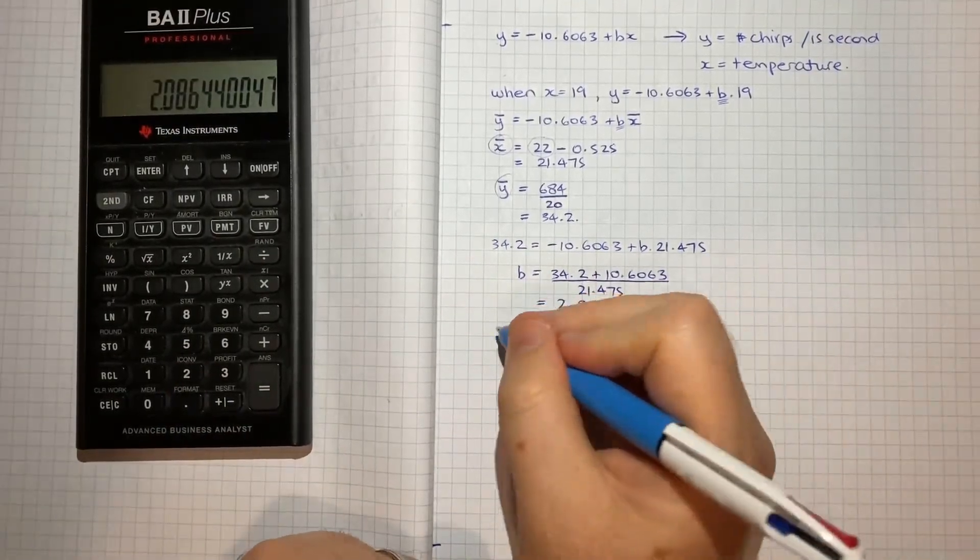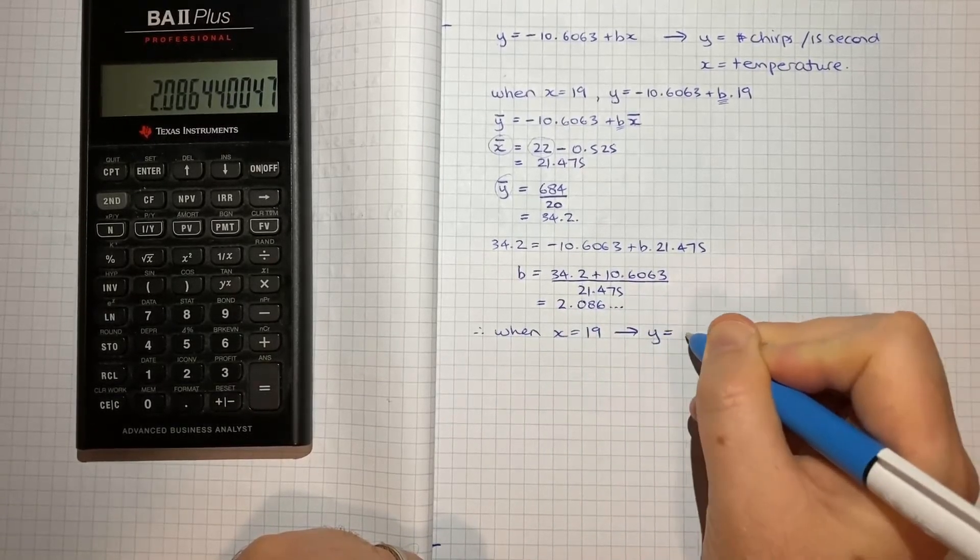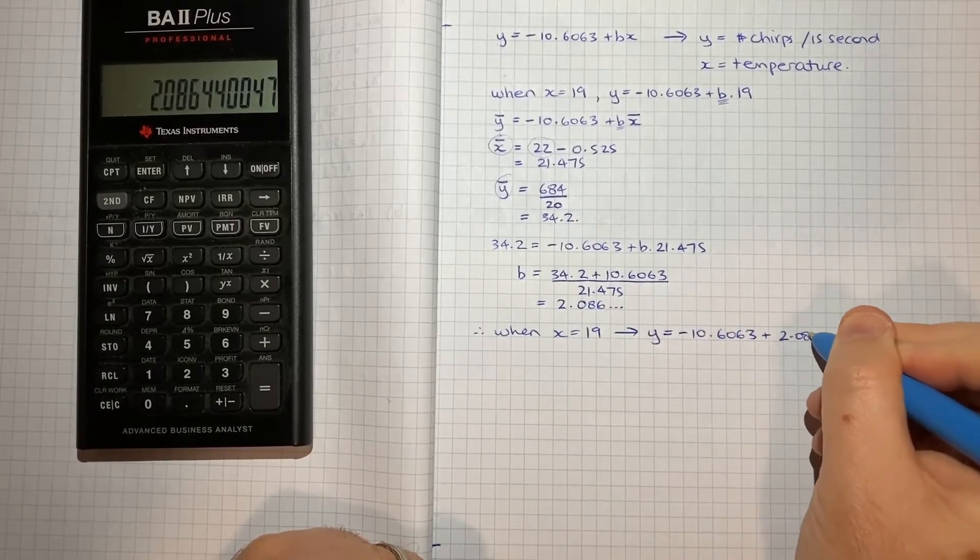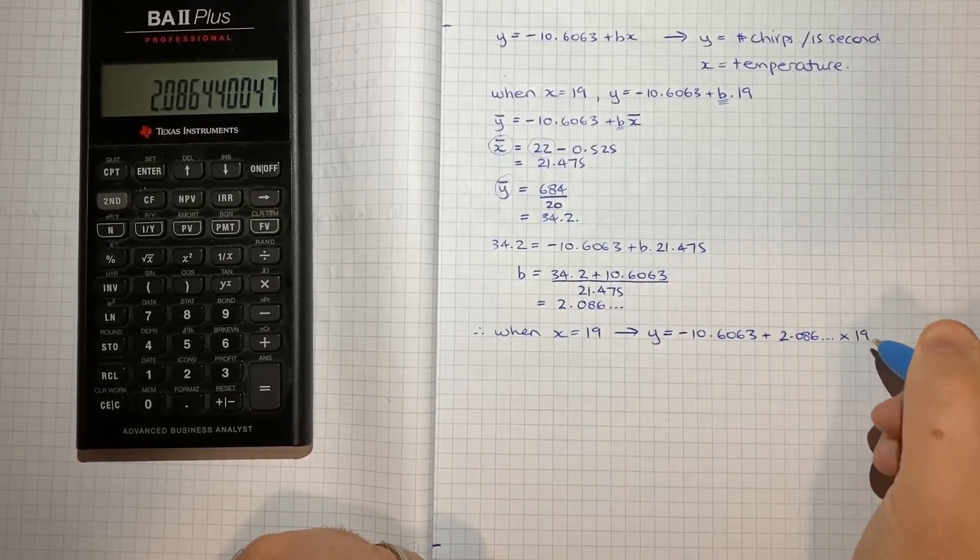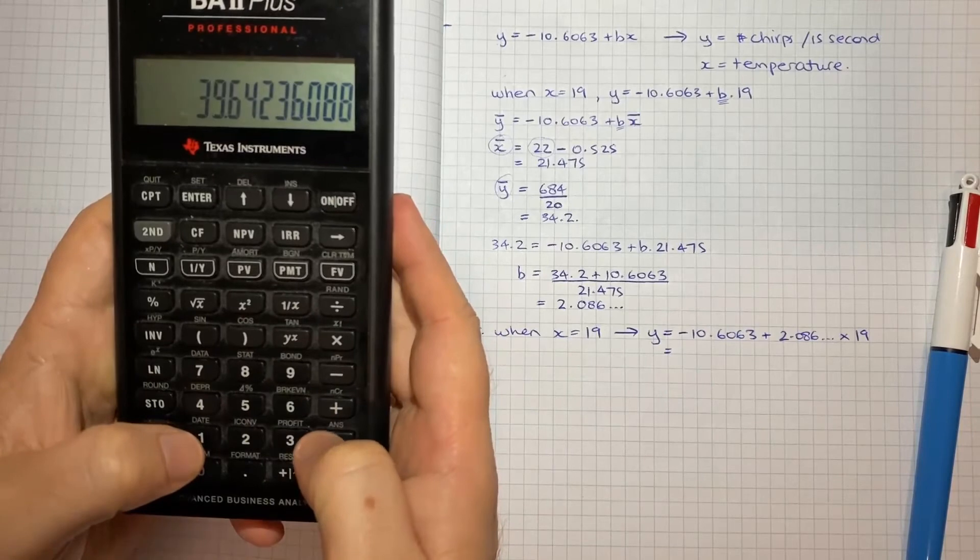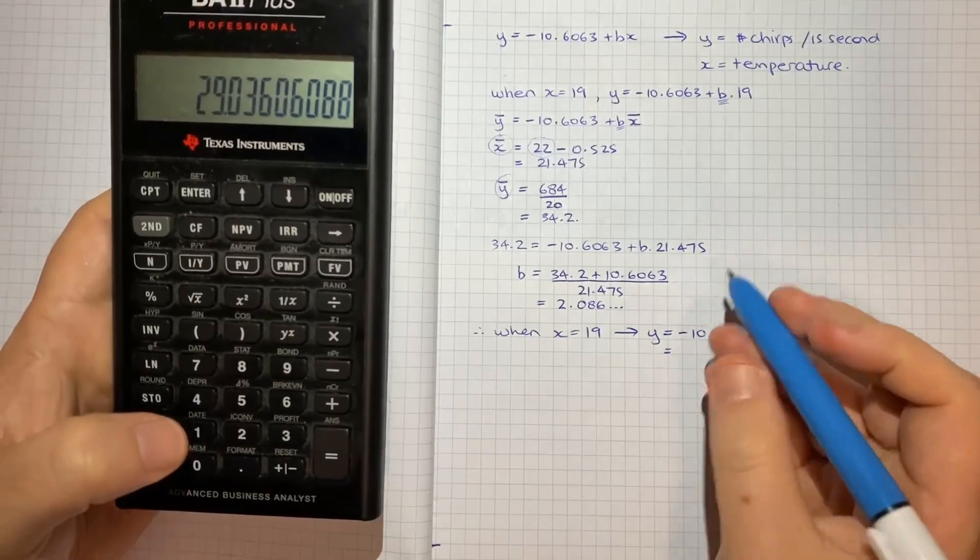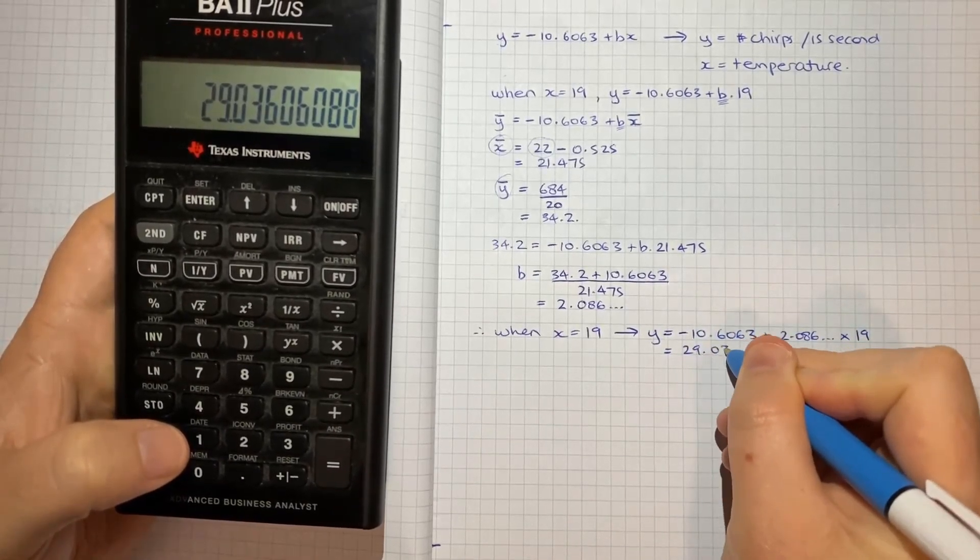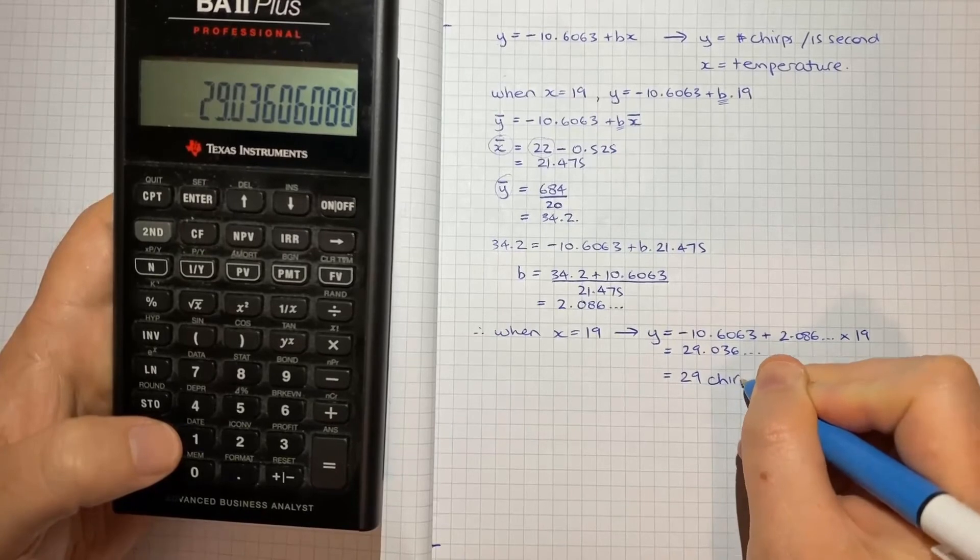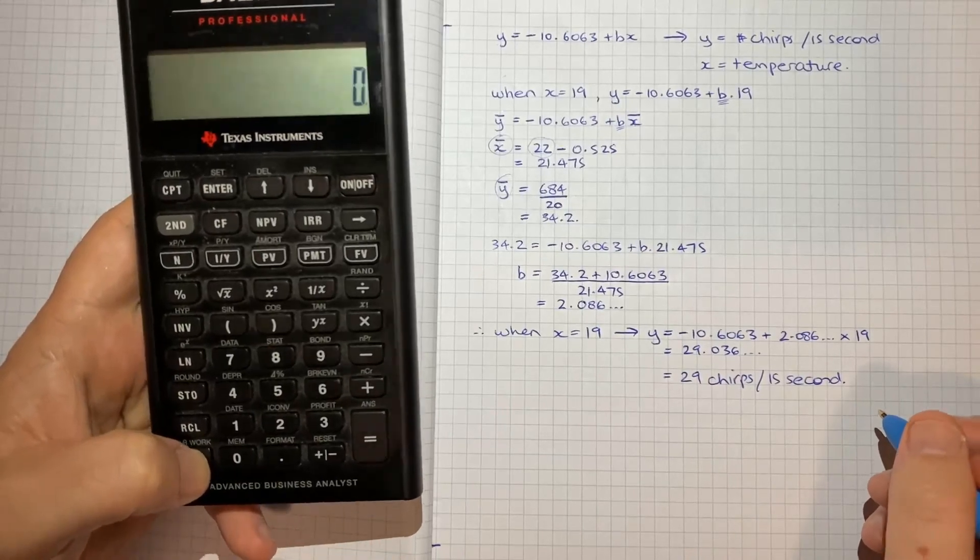So now what we can conclude is when X is equal to the 19 degrees, Y will be equal to negative 10.6063 plus B which is 2.086 times 19, which equals, so we'll take what we've got times 19 minus 10.6063 and we get 29.036 and so on, and we're asked to give a whole number. So that's going to be equal to 29 chirps per 15 second interval. And that's that question done.